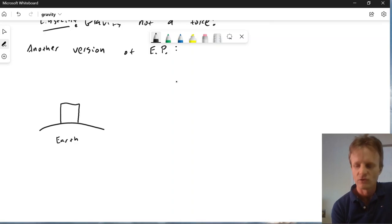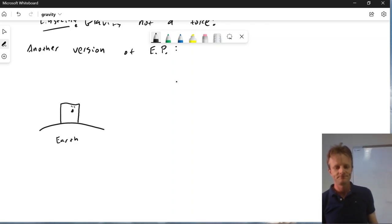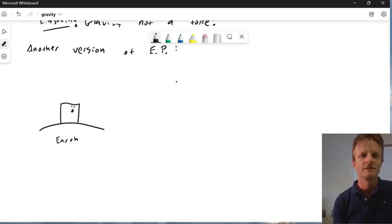And I drop a mass. And I'm going to draw sort of lines above it as it falls to the earth. That's what will happen, right? But I'm in a box. I don't know that I'm on the surface of the earth. There's no windows.